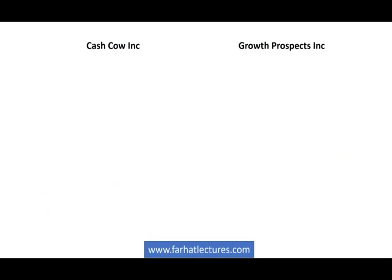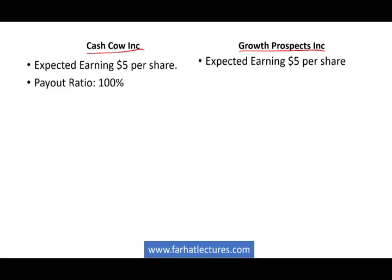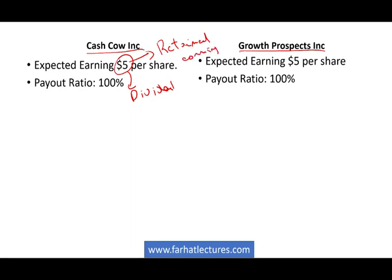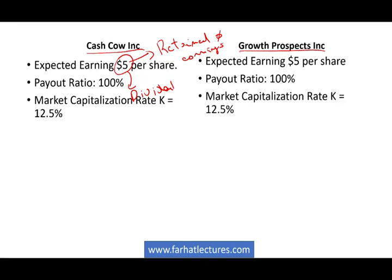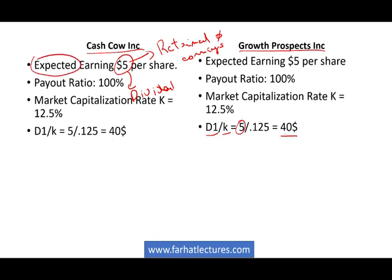Let's start by discussing two companies: Cash Cow Inc. and Growth Prospects Inc. The expected earnings per share for both companies is five dollars. The payout ratio is 100%, meaning when they earn this five dollars, they distribute all of it as dividends. The market capitalization rate, or required rate of return, for both companies is 12.5%. Based on this, the stock price is D1 divided by k — five dollars divided by 12.5% — giving us a stock price of $40.